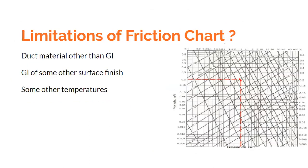The limitations of the friction chart: they are available only for standard material. If you use a different material or the surface finish is different, or if the temperature is other than 20 degrees Centigrade, certain corrections need to be incorporated. These corrections are not very difficult and can be done before using the friction chart for design purposes.